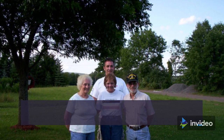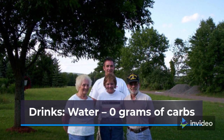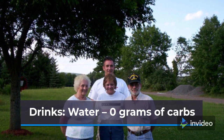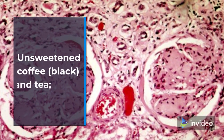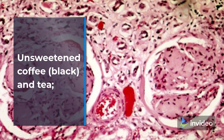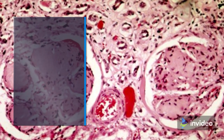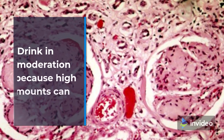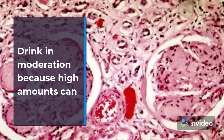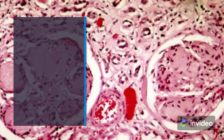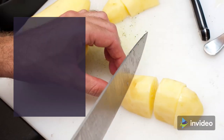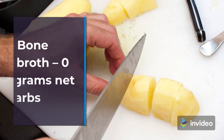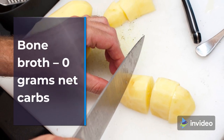Drinks: water — 0 grams of carbs. Unsweetened coffee (black) and tea — drink in moderation because high amounts can affect blood sugar levels — 0 grams of carbs. Bone broth — 0 grams net carbs.